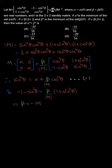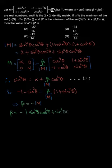So beta equals minus of determinant of M. With beta as minus det(M), we now need the minimum value of beta, i.e., beta asterisk. We will write beta in terms of theta and then find its minimum value.